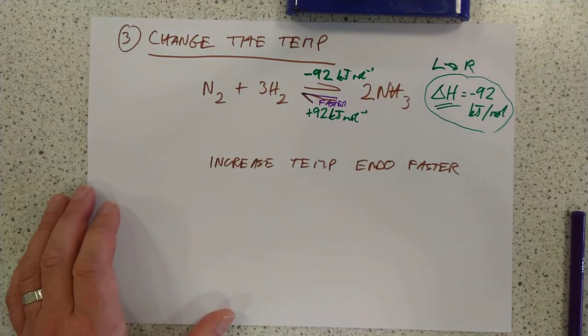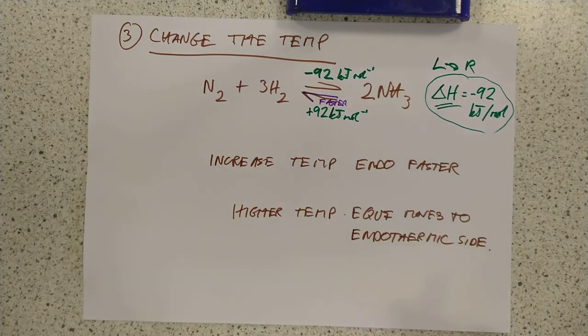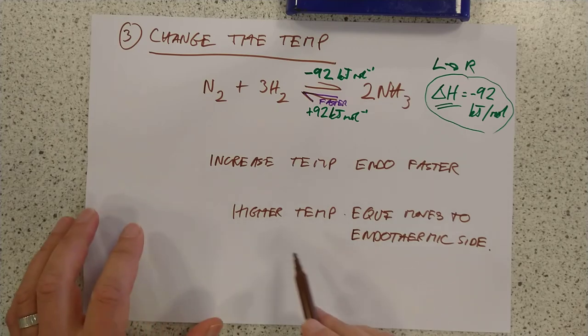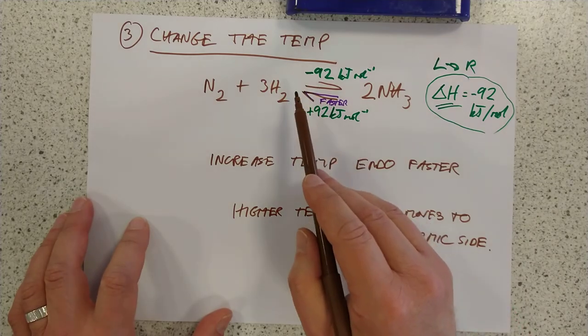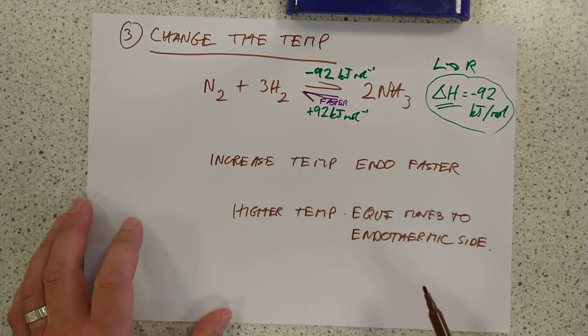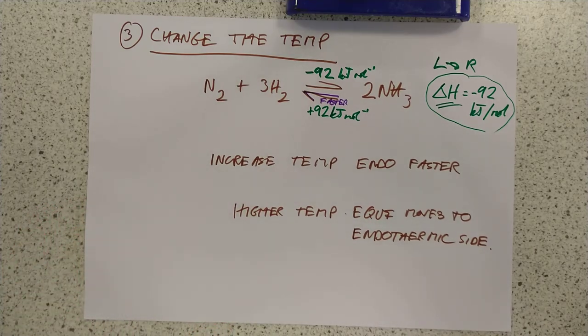So if you increase the temperature, the endo is faster. Let me write the rule down here below then. So this is possibly the easiest to follow. Maybe I should have started with this one. My apologies. So at higher temperatures, the equilibrium moves to the endothermic side, whichever side is endothermic. There is no fixed left and right here for this one either. It just depends on the equilibrium case in point.